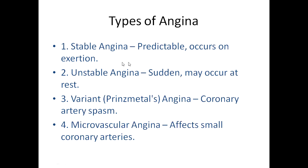The most common type is stable angina — it is predictable and occurs on exertion. When a person walks more than 300–500 meters they develop angina, but on rest the angina vanishes. Unstable angina is very dangerous — it may occur suddenly even at rest or during sleep. Variant or Prinzmetal angina occurs due to spasm of the coronary arteries. Microvascular angina affects small coronary arteries, caused by inflammation of the microvasculature.